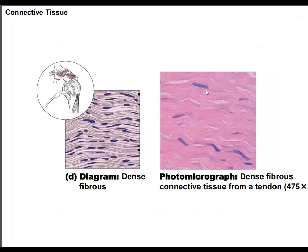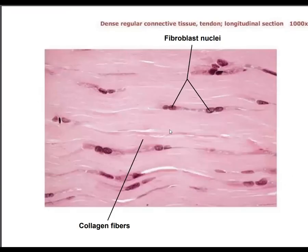The next one is dense regular, also called dense fibrous — you can use either name. Dense regular looks like a soft stream where the waves are very small and very calm. You'll see the waves go up and down very lightly and softly. Those waves clue you in that this is dense regular. The big tissue category is connective.